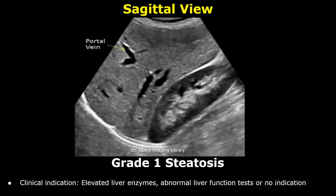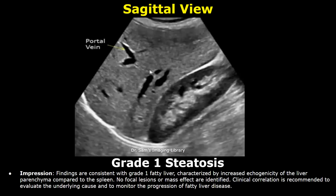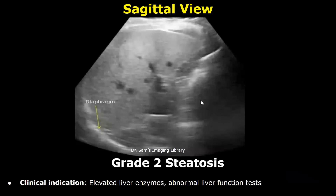Next is grade one fatty liver. The clinical indication can be elevated liver enzymes, abnormal liver function tests, or no indication as it is found routinely. In the findings, write that the liver appears diffusely echogenic with increased echogenicity, consistent with grade one fatty liver. If there is no other abnormality found, you can write that in the impression, then write about the bile ducts and gallbladder, and mention any other lesions if seen. Finally, write the line about clinical correlation.